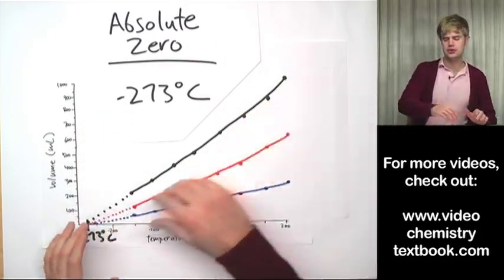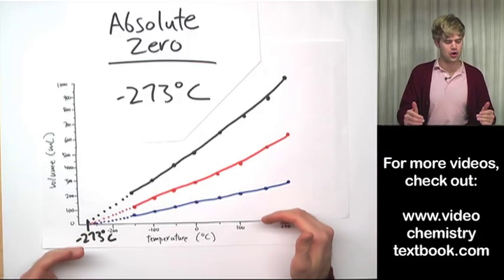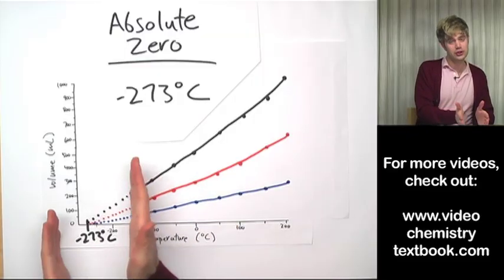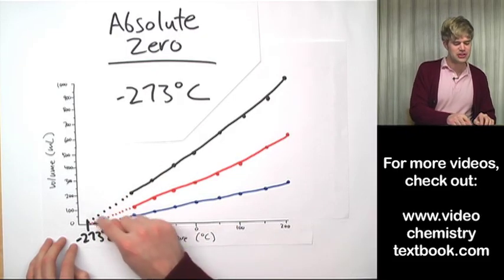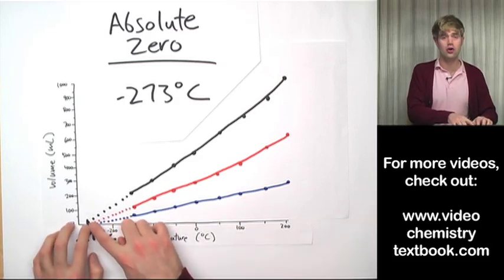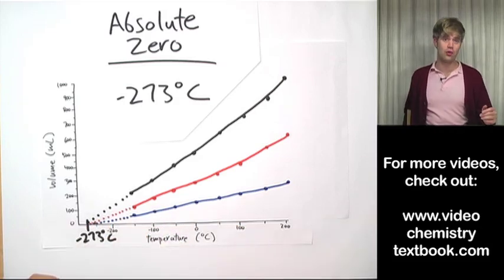So we took these three different size samples of gas. We looked at the volume versus temperature for each of them. And then we found that when we couldn't go any further, we could make educated guesses as to where they would all have volumes of zero. And those come together at one point.